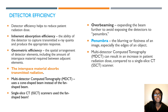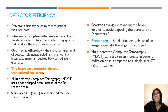For detector efficiency, this helps reduce patient radiation dose. Make sure you understand what overbeaming is, which expands the beam further to avoid exposing the detector to penumbra. Penumbra is the blurring or fuzziness of an image, especially along the edges of an object. Also keep in mind that multi-detector computed tomography can result in an increase in patient radiation dose compared to the single-slice CT scanner.